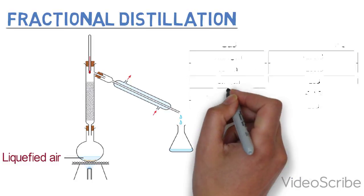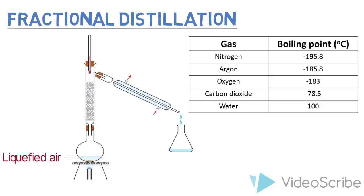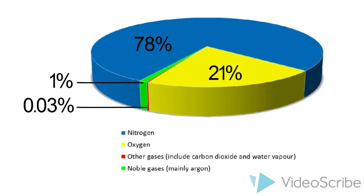The various components are separated based on the different boiling points. As you can see over here, the different gases have different boiling points which allows them to be separated at different times. So this is also how the chemists actually determine the percentage compositions of the various gases in clean air.